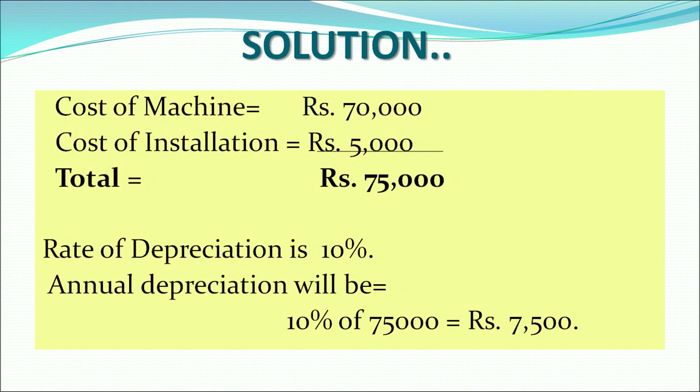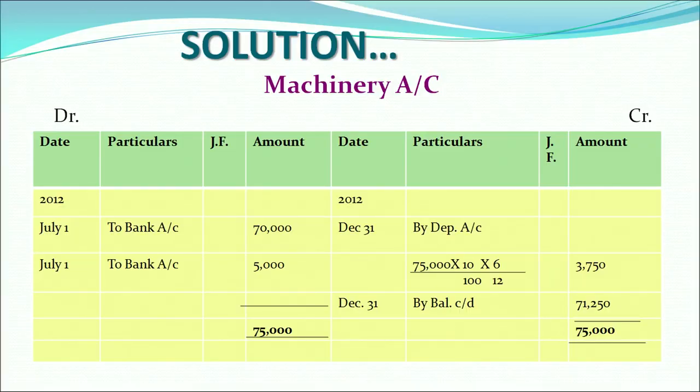First we calculate the annual amount of depreciation. The cost of the machinery is rupees 70,000 plus the installation cost of rupees 5,000, giving a total cost of rupees 75,000. The rate of depreciation is 10%, so annual depreciation = 10% of 75,000 = rupees 7,500. Since we follow the straight line method, this amount of 7,500 remains uniform and will not change for all 3 years. Now let us prepare the machinery and depreciation accounts.